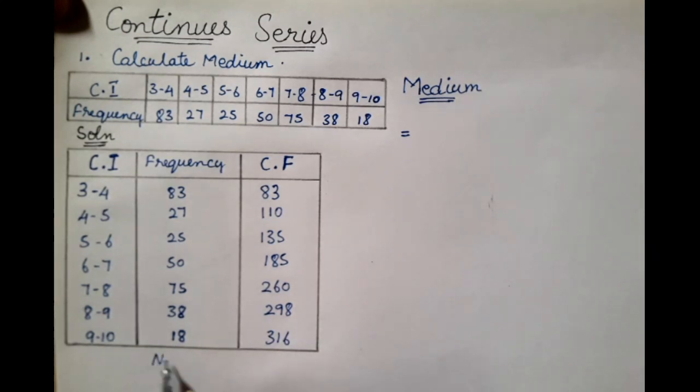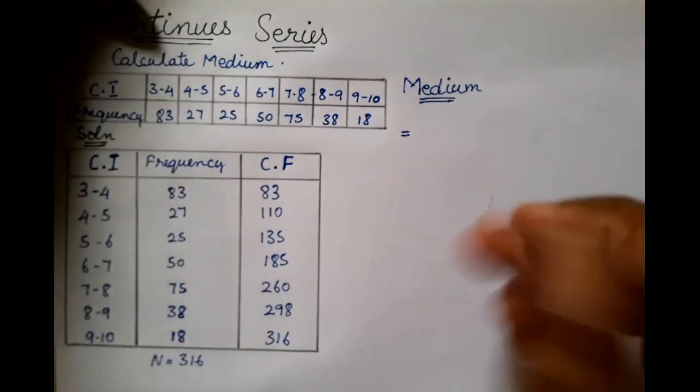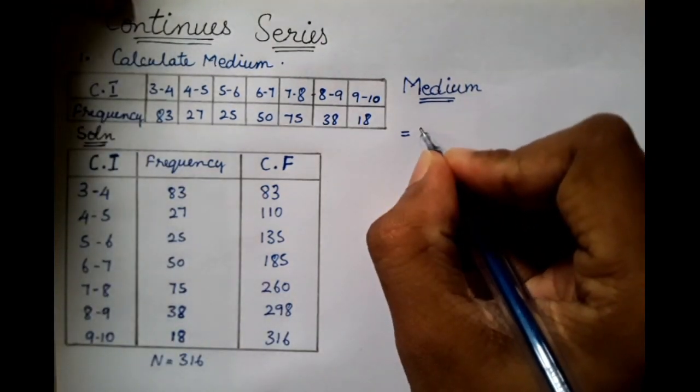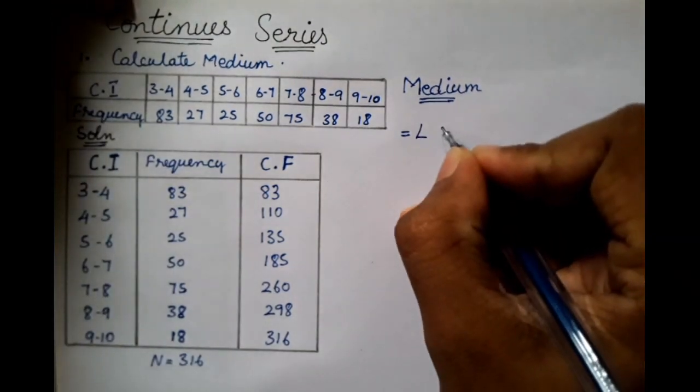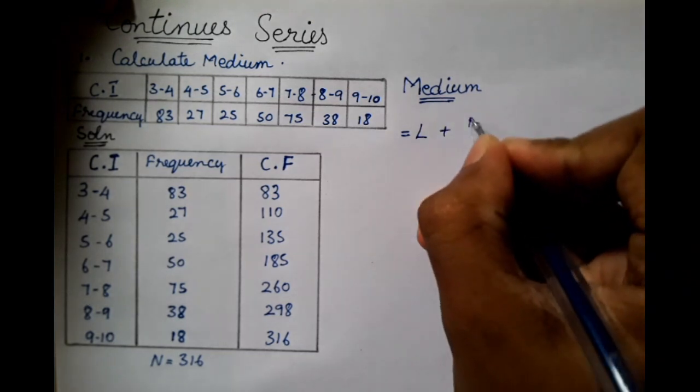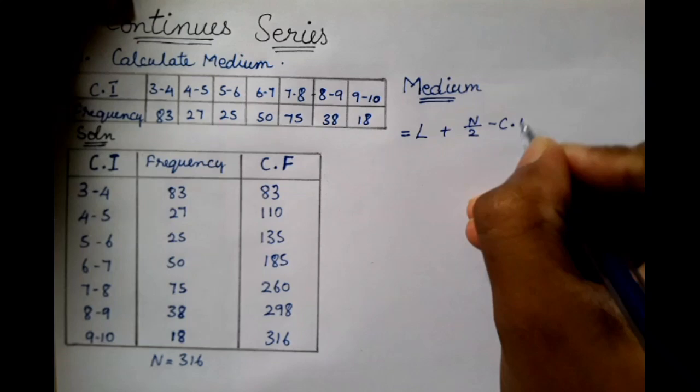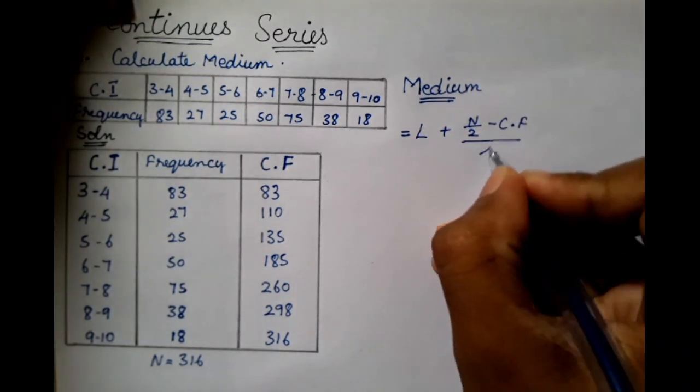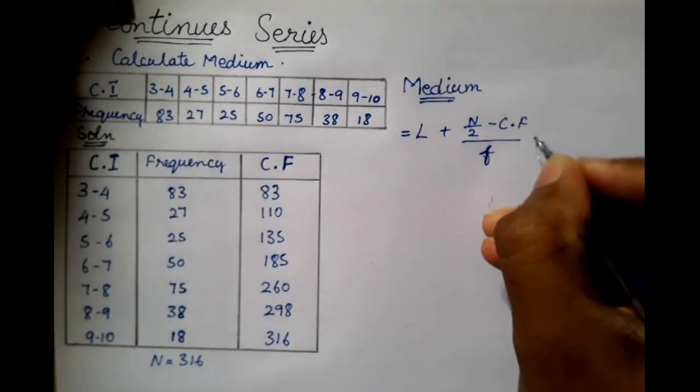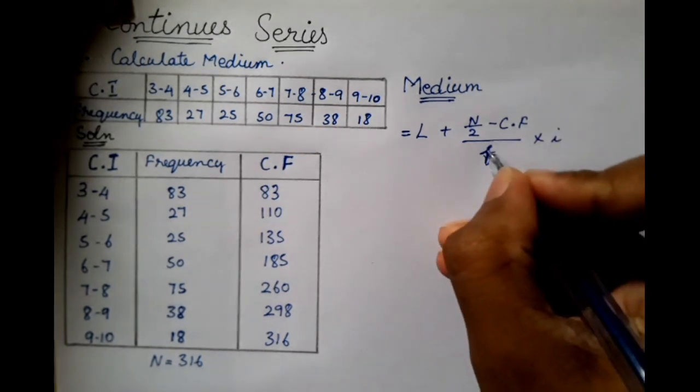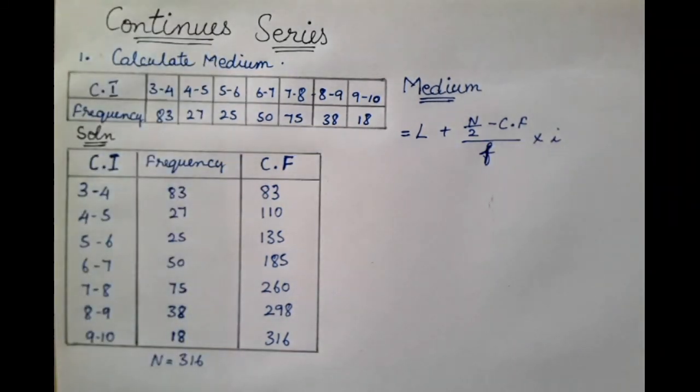So then here, the total is 316. If you look at this, let's see how the median is calculated. It is equal to L plus N by 2 minus CF divided by F into I. This is the median formula.